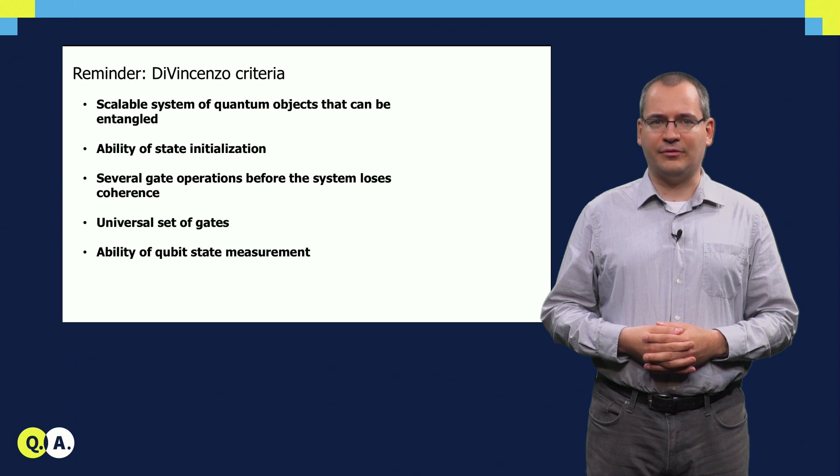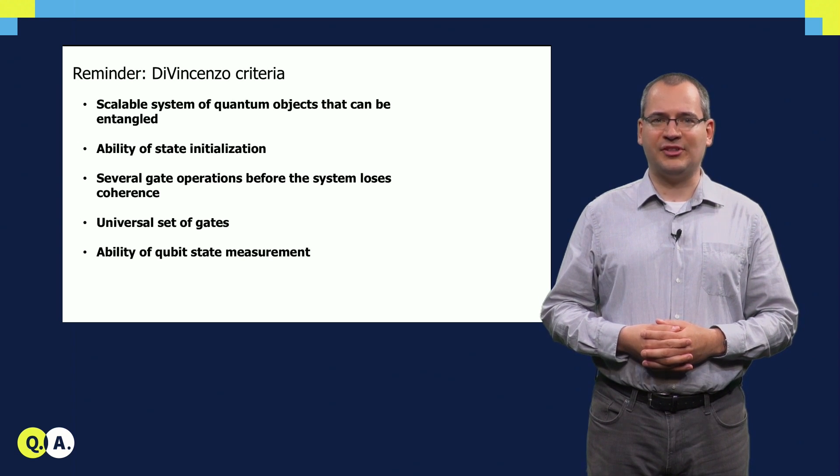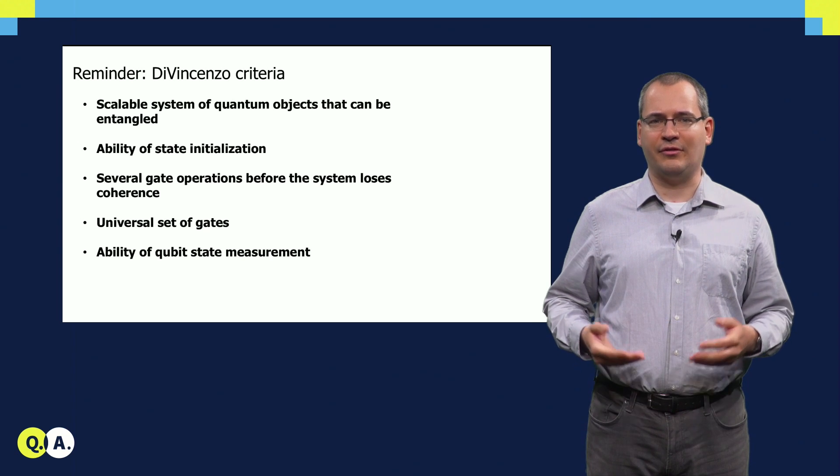We need a universal set of quantum gates. And finally, we have to measure the quantum state of each qubit at the end of the quantum algorithm.